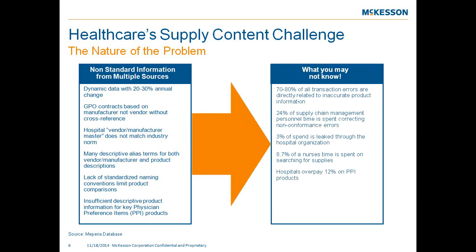24% of supply chain management's time is being spent correcting non-conformance errors. About 3% of a hospital's spend is leaked throughout their organization on average. What we mean by leakage is paying different prices for the exact same product across the organization. That can happen by buying a contracted item outside of the item master, or because of disparate MMIS systems across an IDN, causing significant spend going outside our organizations.